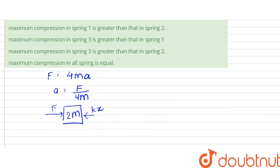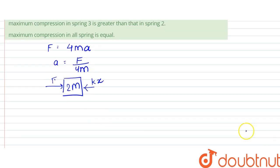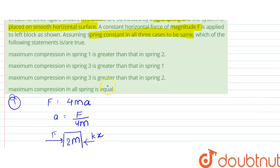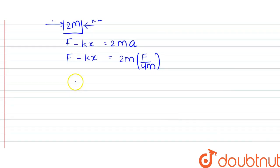That leads to an acceleration in the pseudo force. So F minus kx would be equal to 2m into acceleration, so F minus kx would be equal to 2m into F by 4m. This is in case one.